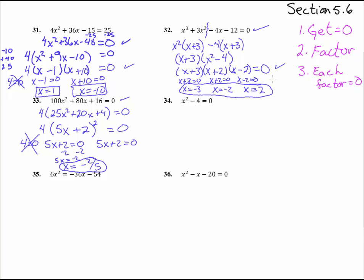Alright, number 34. We've got to get it equal to 0. Check. Got to factor it. Okay, let's look at it. Factoring. Can we pull out a greatest common factor? No. But this is a difference of a perfect square and a perfect square. So that means we've got x and x. 4 is 2 times 2. And then to make sure that there are no middle terms, we have to have a plus and a minus. So we factored it. Excellent. Check.